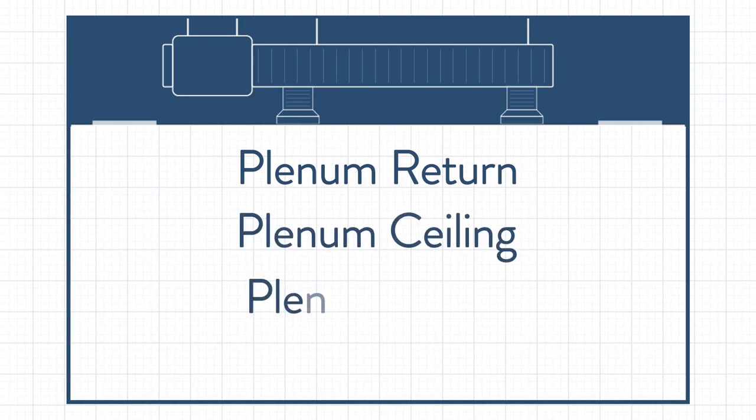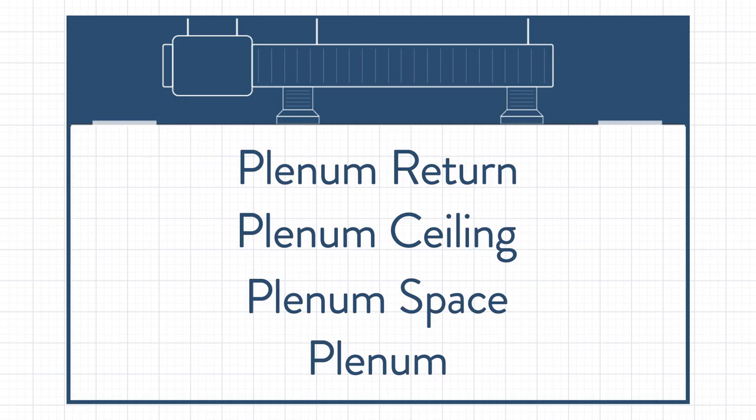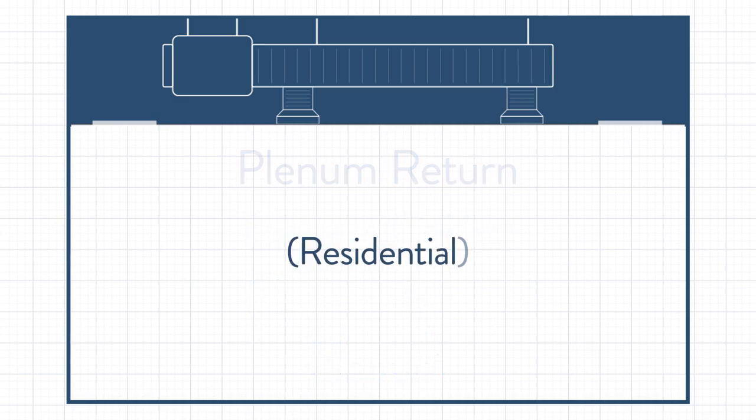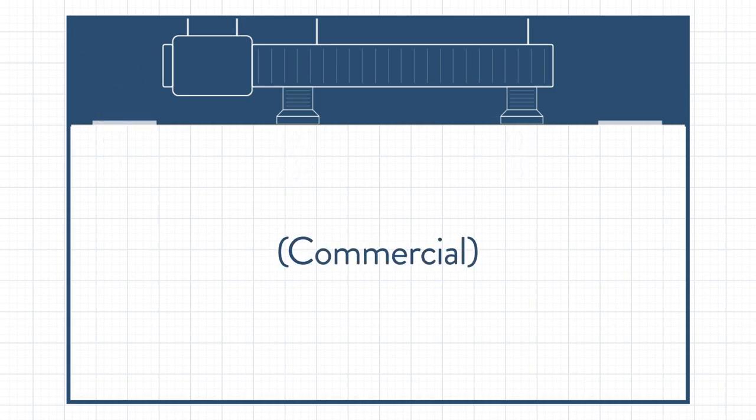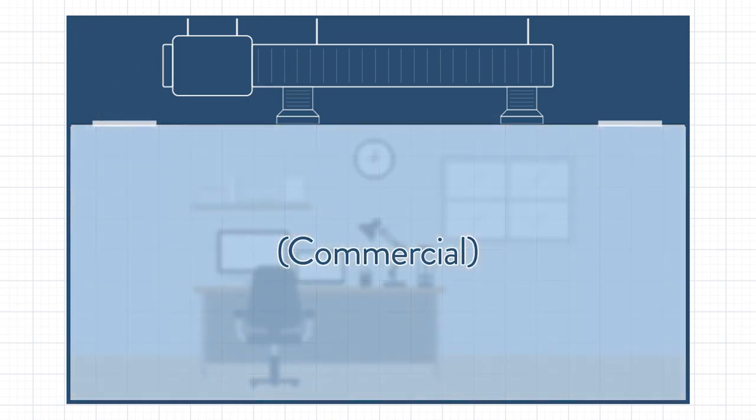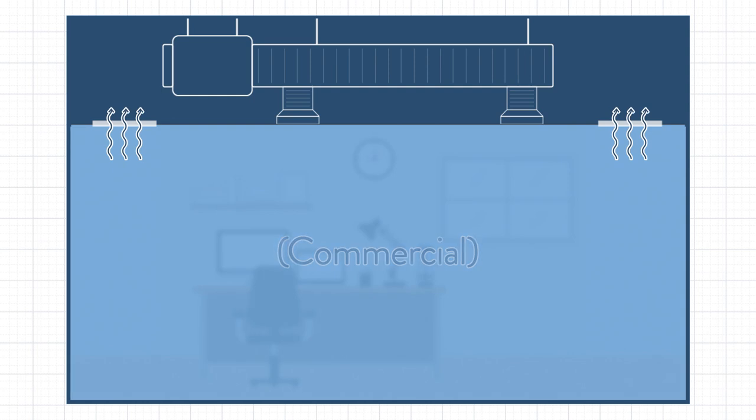Plenum returns are unlike the HVAC systems you find in residential buildings, where ducts are used to pull air in and push air out. In plenum returns found more in commercial construction, the entire plenum space is set aside to pull air in through vents while simultaneously pushing that air out to rooms throughout the building via ducts.